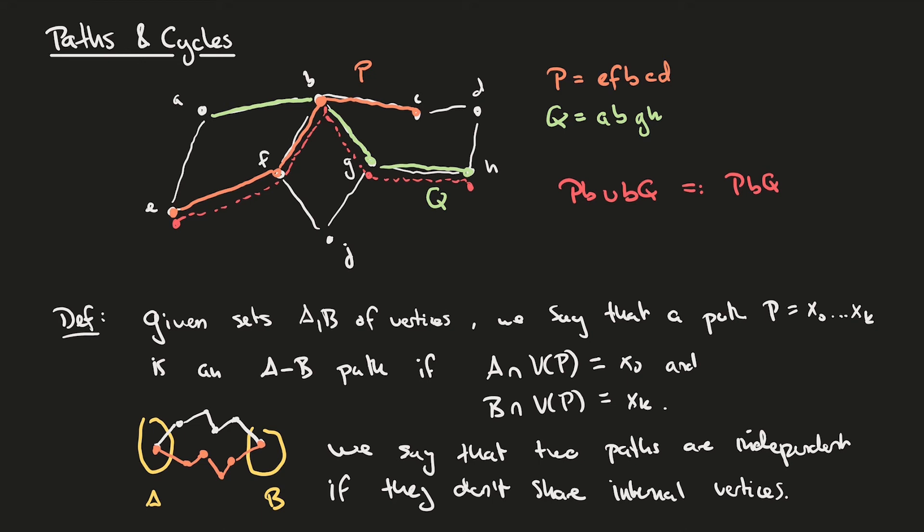However, if for some reason, this path were to intersect the path at an inner vertex, then these two paths would no longer be independent.